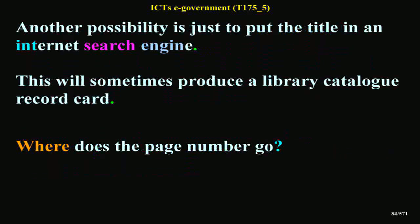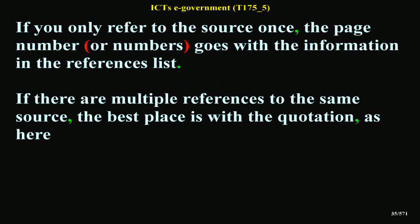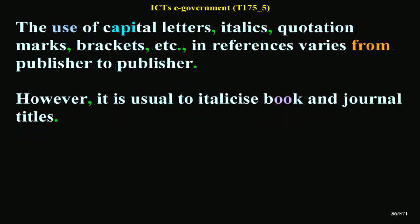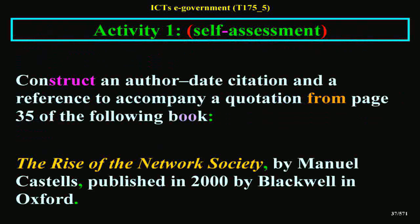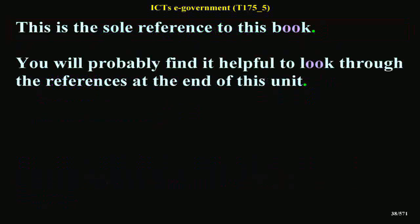Where does the page number go? If you only refer to the source once, the page number or numbers goes with the information in the references list. If there are multiple references to the same source, the best place is with the quotation. The use of capital letters, italics, quotation marks, brackets, etc., in references varies from publisher to publisher. However, it is usual to italicize book and journal titles. Activity 1 Self-Assessment: Construct an author-date citation and a reference to accompany a quotation from page 35 of the following book — 'The Rise of a Network Society' by Manuel Castells, published in 2000 by Blackwell in Oxford. This is the sole reference to this book.